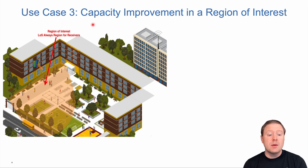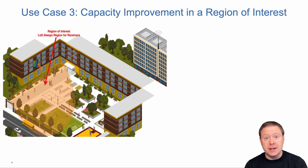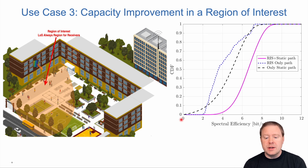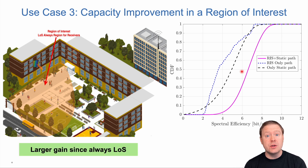The third use case is to provide capacity improvements in a particular region of interest — locations where it is important to deliver performance and the base station cannot do it alone. We deploy a RIS that maintains line of sight to all potential locations in this region, which was not guaranteed in the previous use case. Looking at spectral efficiency via the cumulative distribution function, we have the black curve without a RIS and see a much more substantial improvement when we deploy it. However, even here, we still need the combination of a static and a RIS path — the case with only the RIS path performs much worse.